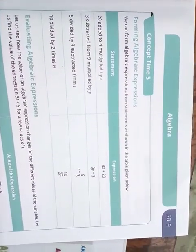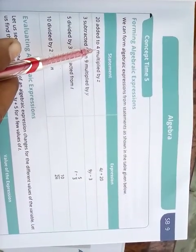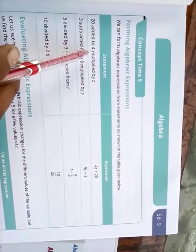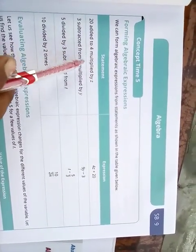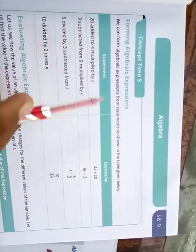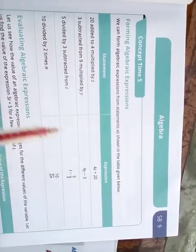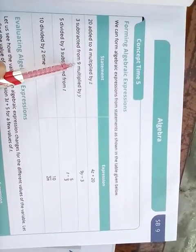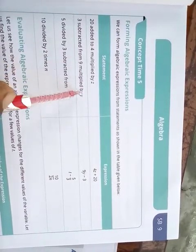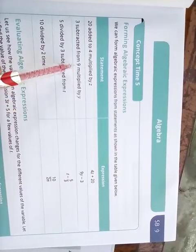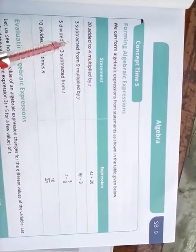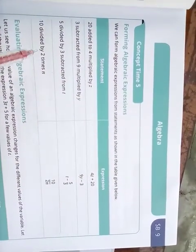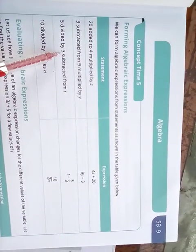Here, 20 added to 4 multiplied by z. What do we do? We multiply. When 4 is multiplied by z, we get 4z, and 4z is added to 20, which means 4z plus 20. So here is written 4z plus 20. Clear? Now, 3 separated from 9 multiplied by y. First of all, what do we do? We multiply. When we multiply 9 by y, we get 9y. 9y separated means minus how many? 3. So the answer will be 9y minus 3. Here written is 9y.